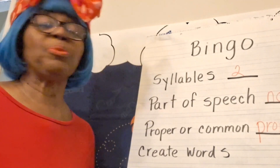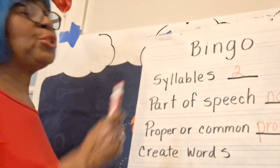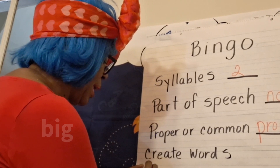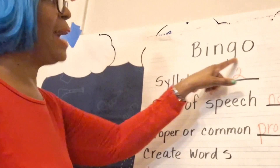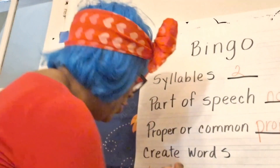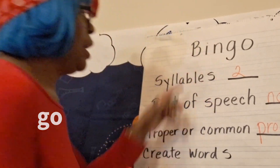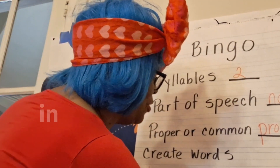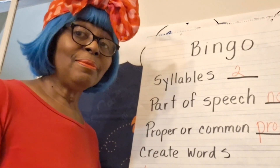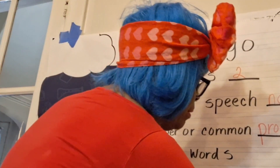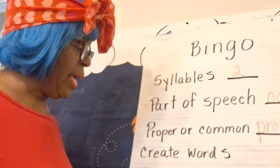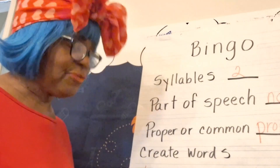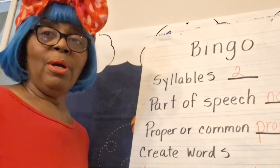Now what we're going to do is create words from the word Bingo. Ready? B-I-N-G-O — and you can use the letters more than once. What words do you see in Bingo? Yes — big, B-I-G! What else? Good — go, G-O! These are all sight words. Any others? N-I-N? Excellent! You're so smart! Any more? Bin — B-I-N. What's a bin? Like a clothes bin, a shopping cart bin. So: big, go, in, and bin.